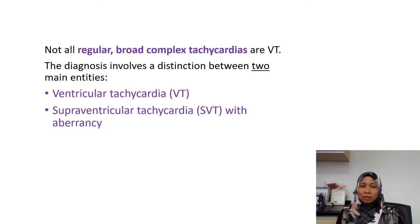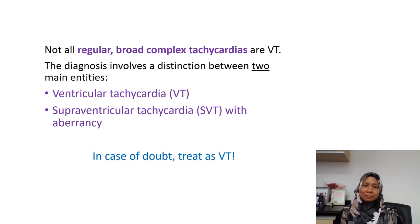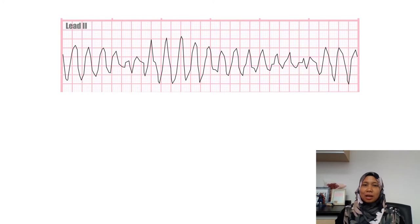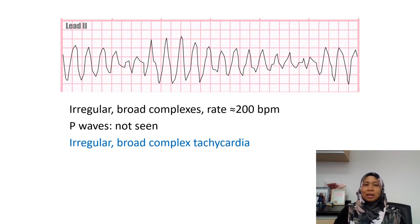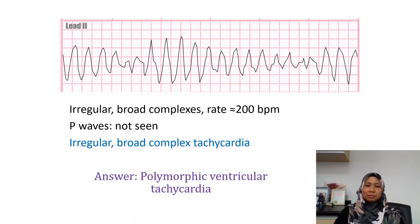As explained before, SVT can also present with regular broad complex tachycardia because of aberrant conduction, like in bundle branch block. However, if we have any doubt in a clinical situation, we need to treat it as VT. The next strip is also a broad complex tachycardia, but it is irregular — an irregular broad complex tachycardia with a rate of more than 200 beats per minute. This is a polymorphic ventricular tachycardia.